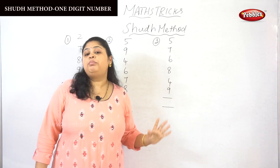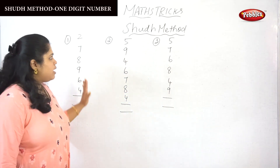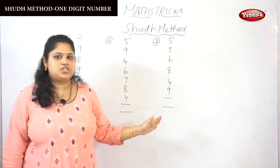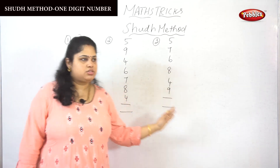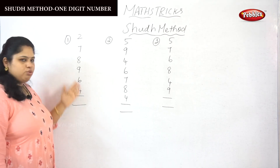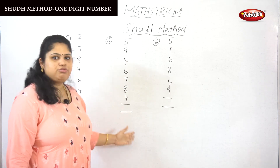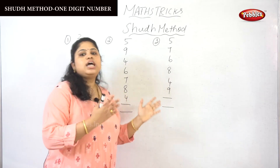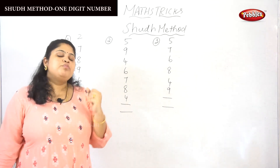Now I'm going to teach a proper soothe method. The soothe method helps us to perform addition. For example, I have taken three different sets of numbers: 27896, 45946, and 78457684 — these are the different sets of numbers I have taken.